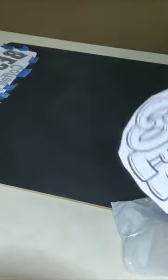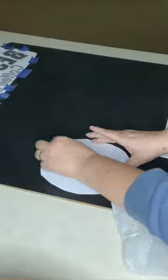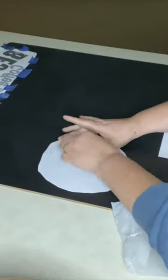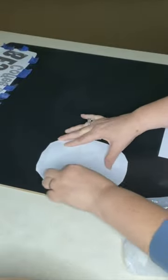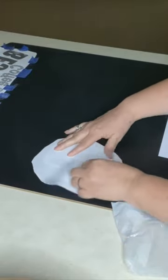Take your printout and turn it over. Take some white chalk and rub all over the back side of your printout of what you want to add to your chalkboard, and make sure you get it all covered.